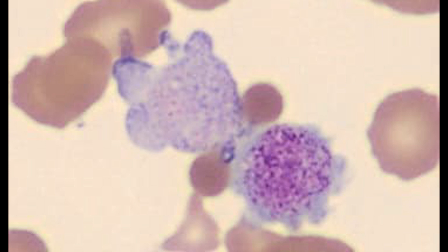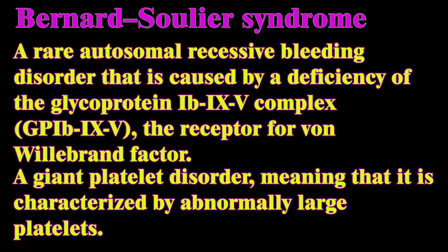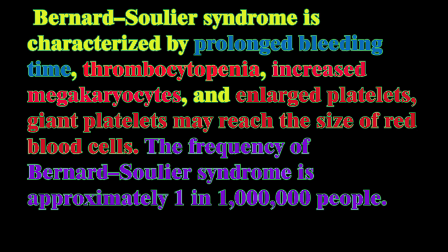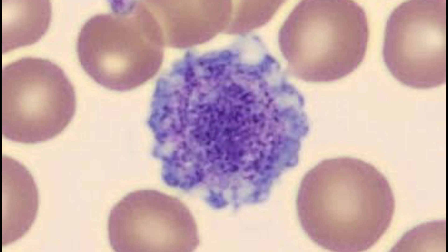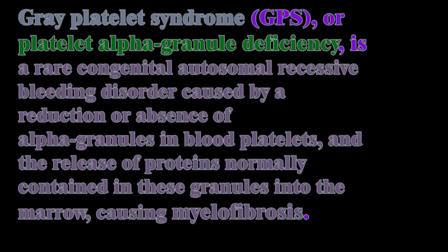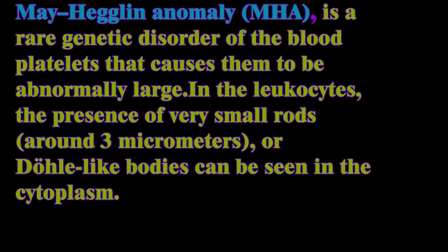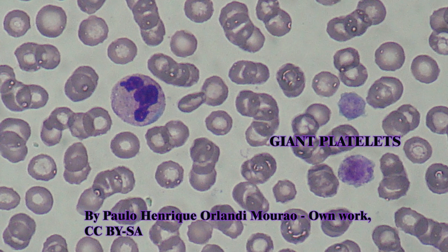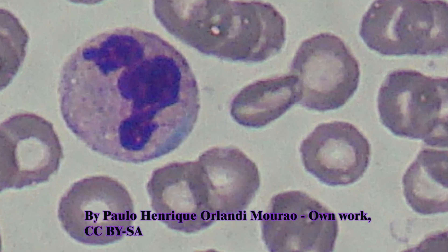Any giant platelets present in the smear should be reported. Giant platelets can indicate Bernard-Soulier syndrome, which is a very rare hereditary blood clotting disorder characterized by unusually large platelets and a low platelet count. Other conditions indicated by giant platelets include gray platelet syndrome and May-Hegglin anomaly. Gray platelet syndrome causes giant platelets characterized by a gray color, while May-Hegglin anomaly is characterized by a recessive gene causing giant platelets. All giant platelet disorders are usually mostly asymptomatic but can cause excessive bleeding and bruising.